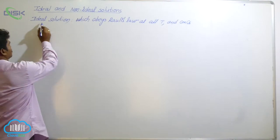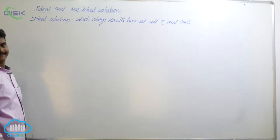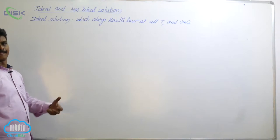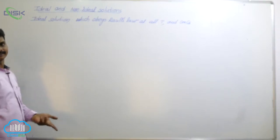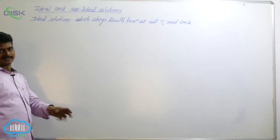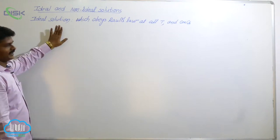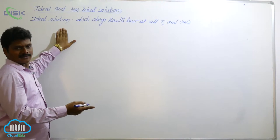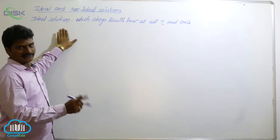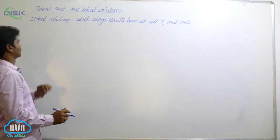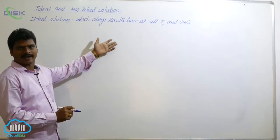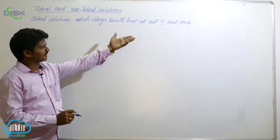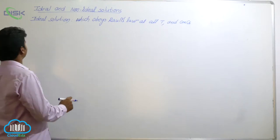Here we discuss about solutions of liquid mixtures. That means the solute is liquid and the solvent is liquid — both solute and solvent are liquids. In that, first is the ideal solution, which means one that obeys Raoult's law at all temperatures and concentrations. What are the conditions to make an ideal solution?